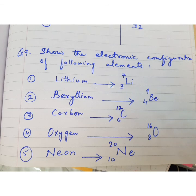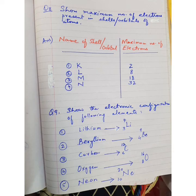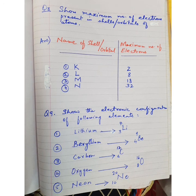Question number nine: 'Show the electronic configuration of the following elements.' The elements are: lithium (3Li7), beryllium (4Be9), carbon (6C12), oxygen (8O16), and neon (10Ne20). You have to show and draw the structures of their electronic configurations.